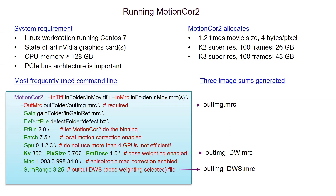When the input movie is super-resolution, we typically perform 2x binning done by Fourier cropping in Fourier space. When users specify the number of patches in both x and y dimensions, local motion measurement and correction will be enabled. The next option lists the number of GPUs involved in the computation. We do not recommend using more than four GPUs because adding extra GPUs does not improve performance very much.